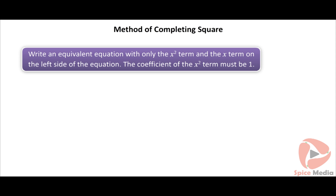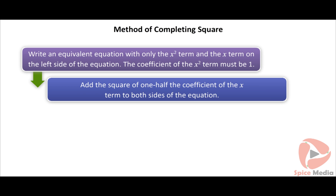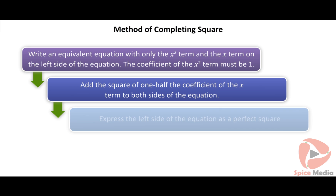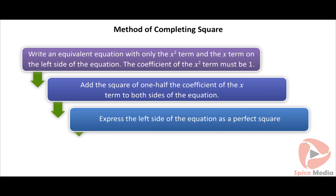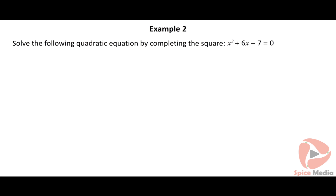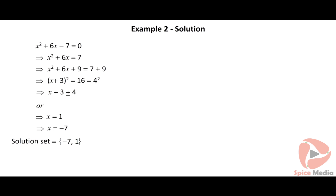Here are the steps to solve a quadratic equation by the completing square method: write an equivalent equation with only the x² term and the x term on the left side of the equation; the coefficient of the x² term must be 1; add the square of half the coefficient of the x term to both sides; express the left side as a perfect square; then solve for x.